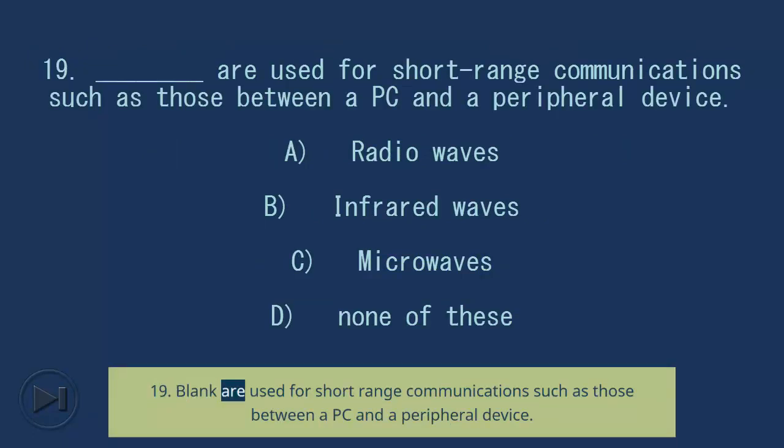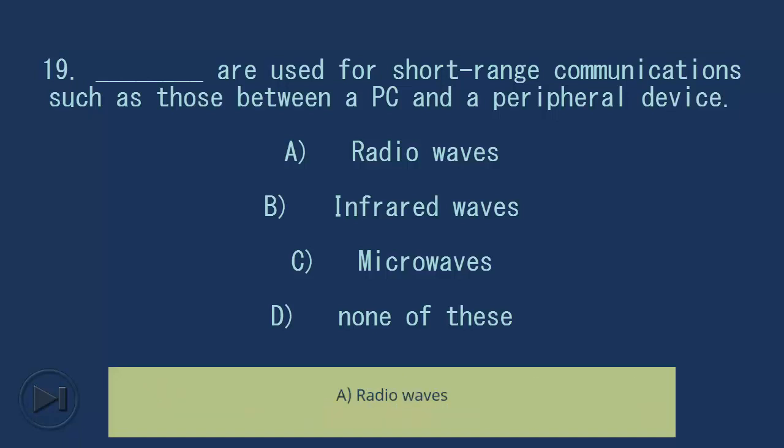Question 19: Blank are used for short-range communications such as those between a PC and a peripheral device. A) radio waves, B) infrared waves, C) microwaves, D) none of these. Answer: B, infrared waves.